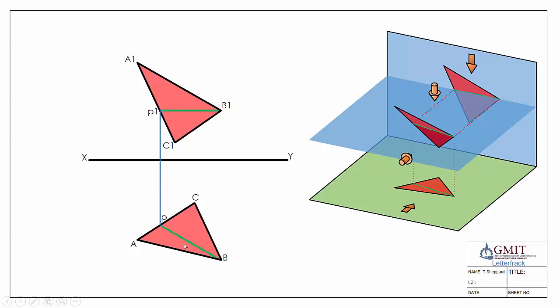Because it's a level line in elevation that line there is going to be a true length line when we look in plan view. So that saves us having to take our first auxiliary. We now have a true length line on our plane.